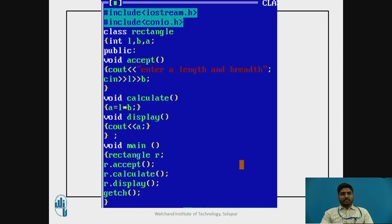Here I have written the program in Turbo C++. Class rectangle is used with data members integer length, breadth, and area. In the public section, the program uses the inside the class definition approach — member functions are defined: void accept uses cout and cin to enter the length and breadth, storing them in l and b. The next member function is void calculate, where a equals l multiplied by breadth.